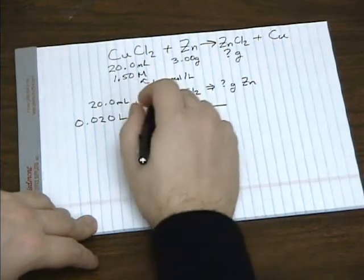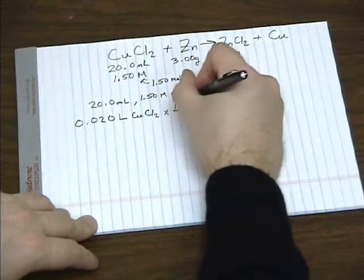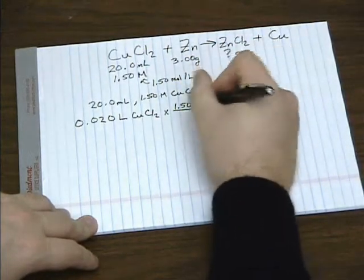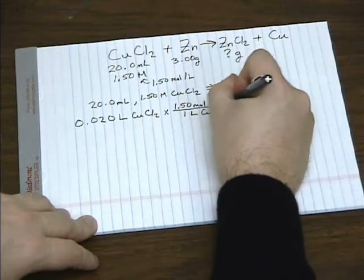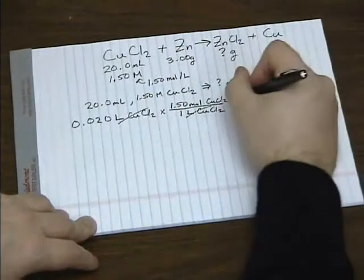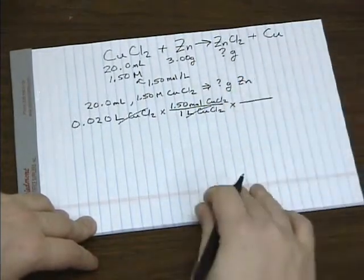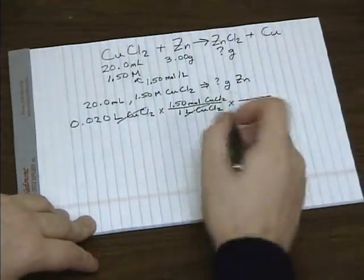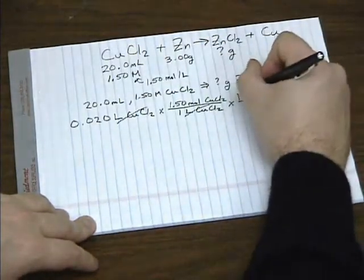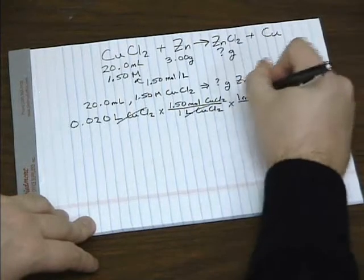And again, 1.5 moles per liter means that we have 1.5 moles of this compound per 1 liter of it. Now we need to convert moles of copper 2 chloride to moles of zinc. And it's a 1 to 1 ratio.